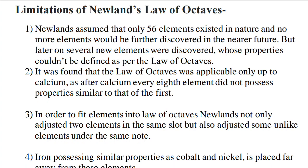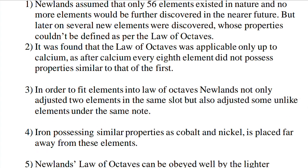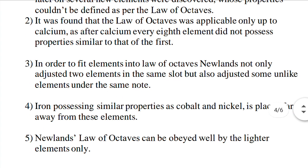After Calcium, every eighth element did not possess properties similar to the first. Third, to fit elements into his law, Newlands placed two elements in the same slot, and also placed elements with unlike properties together. Fourth, Iron, which has similar properties to Cobalt and Nickel, was placed far away from them. The law worked well only for lighter elements and failed for heavier ones.